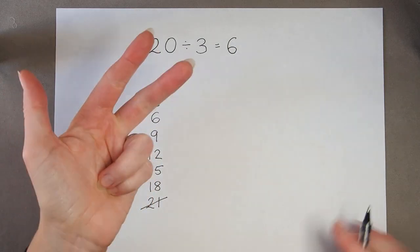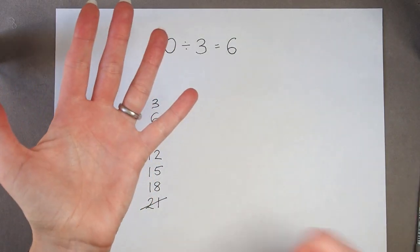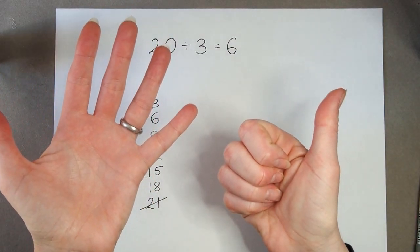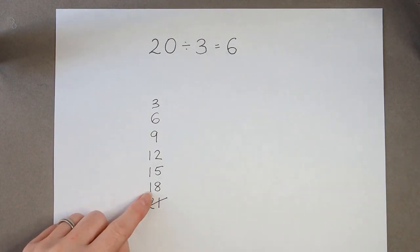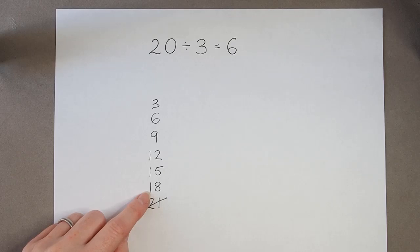3, 6, 9, 12, 15, 18. If I know my tables, then I know that 3 times 6 is 18. And I can use that multiplication fact.